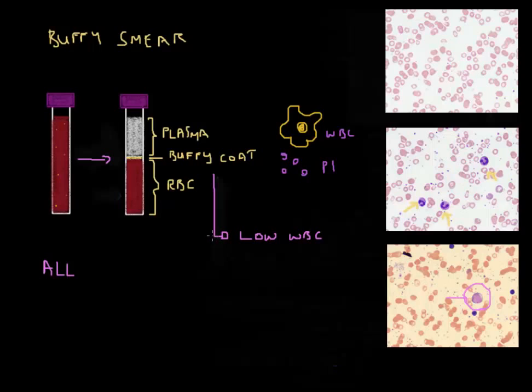The buffy smear can also be used for other things. For instance, we can use it to extract DNA. This is quite logical if you think about the fact that red blood cells do not contain a nucleus, so this is not a good place to find DNA. The same with the plasma where there's little cells. But the buffy coat containing white blood cells with nuclei would be a very good source of DNA.